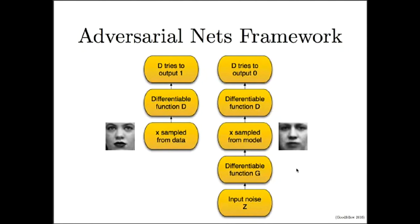The other network is the generator network. The generator network takes some kind of random noise as input and transforms that random noise into a randomly selected example from the distribution that the network is learning to model. The training procedure works in two different steps.